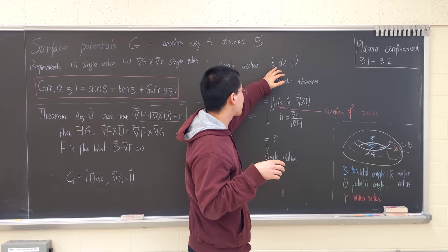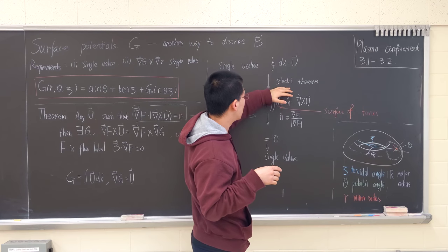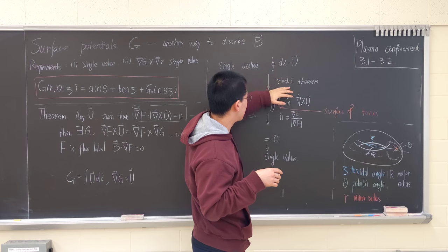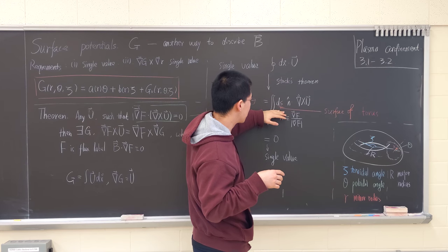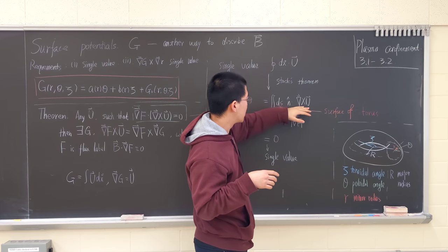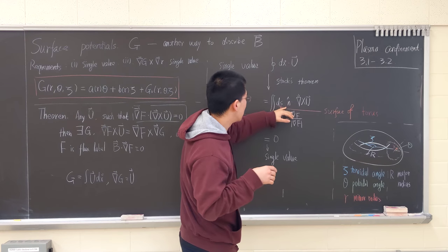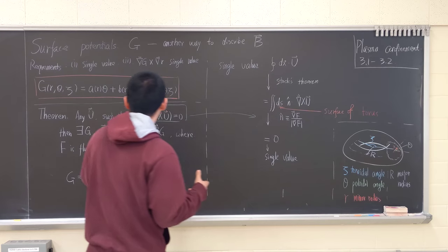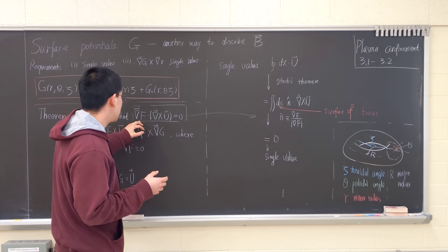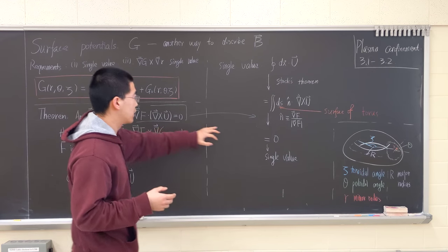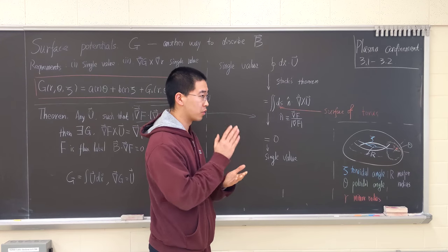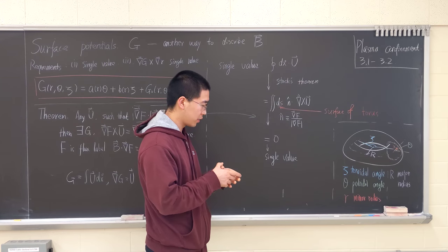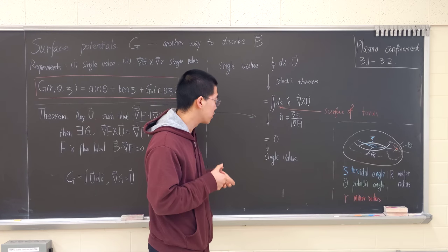Then integrate it and use Stokes' theorem. Because it's a line integral, we make it into a surface integral. The surface we're talking about is the surface of a torus. From the definition of N, the normal vector perpendicular to the surface.